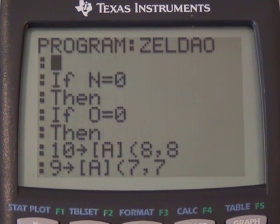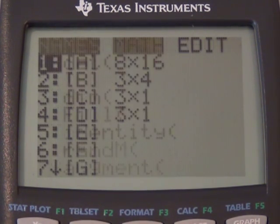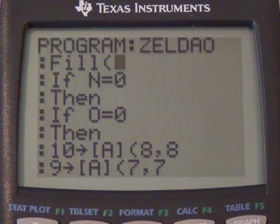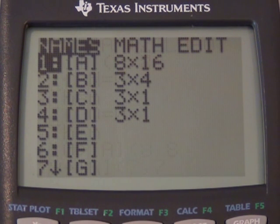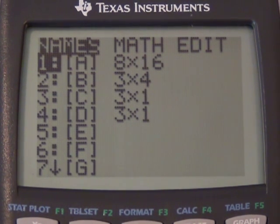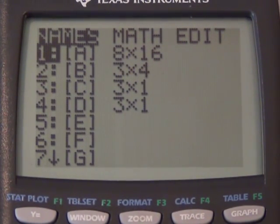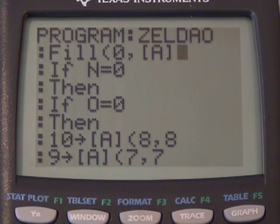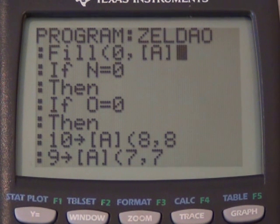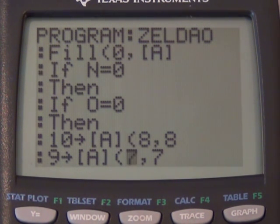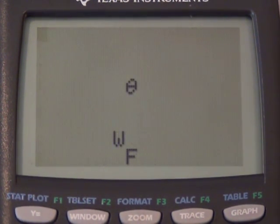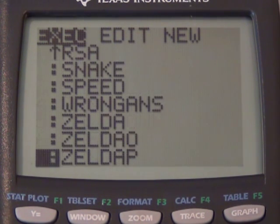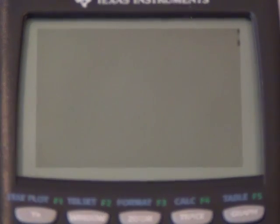Before we do anything, we need to do, we need to simply do a fill. That way we can qualitatively fill in the map. We don't need to fill it in with like zeros or anything like that. So we're gonna actually, basically whenever we change the screen, we're gonna fill it with zeros.